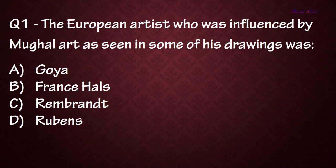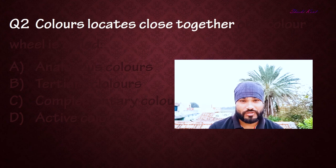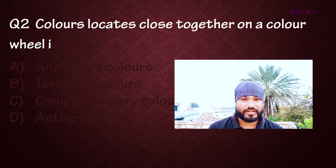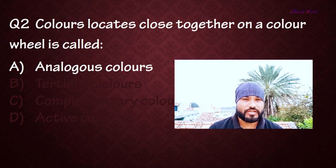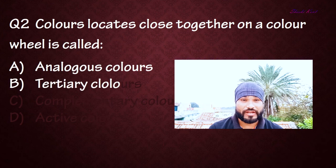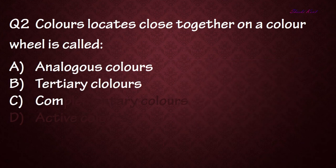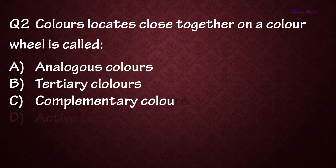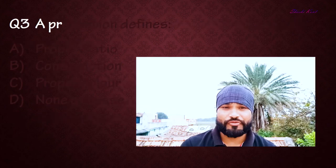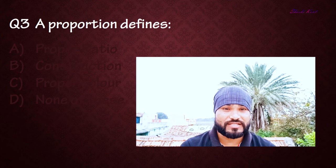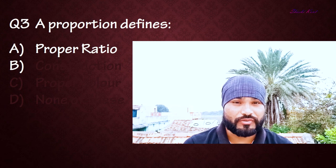Question number two: Colors located close together on a color wheel are called — Option A: Analogous colors, Option B: Tertiary colors, Option C: Complementary colors, Option D: Active colors. The right answer is A: Analogous colors.